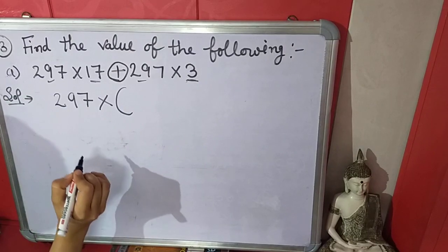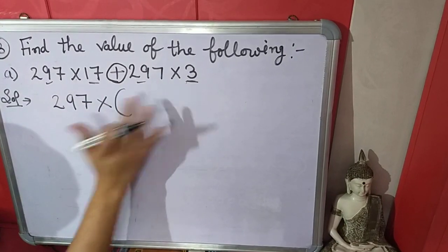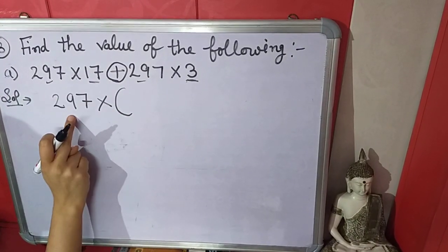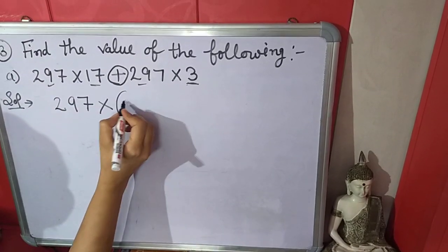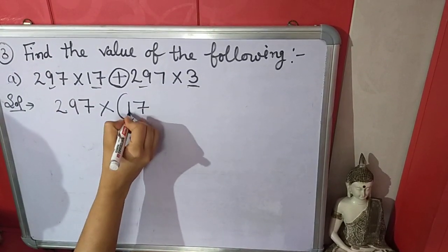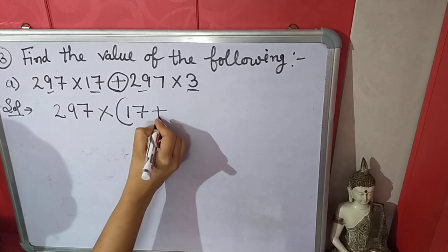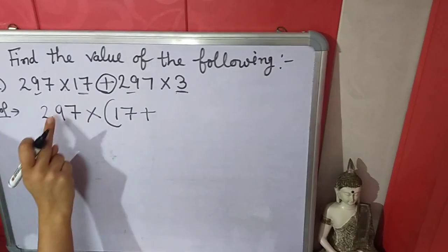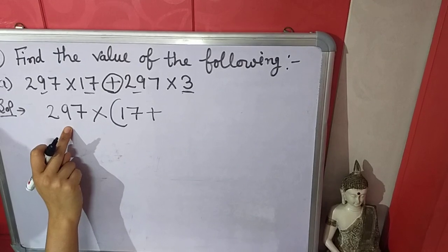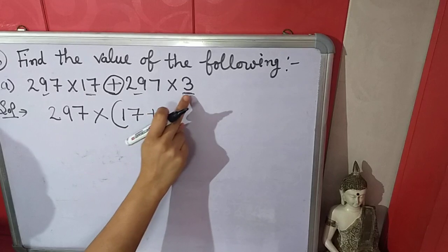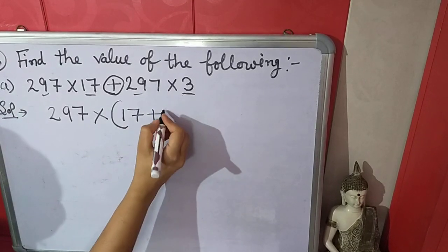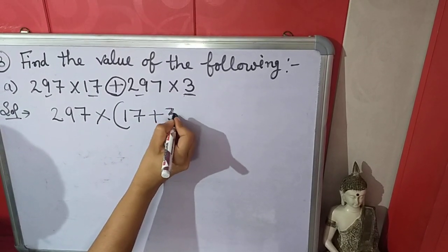Now write in brackets. 297 is outside, multiply is outside. What is left there? 17. Then plus. Again 297, but it is already outside, so we will not write again. Multiply is outside, we will not put sign of multiply. What is left here? 3. So we will write 3.